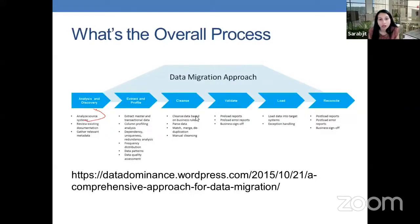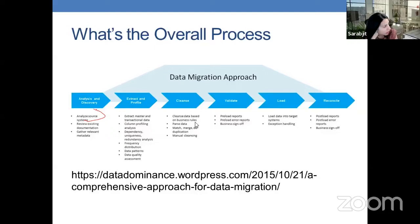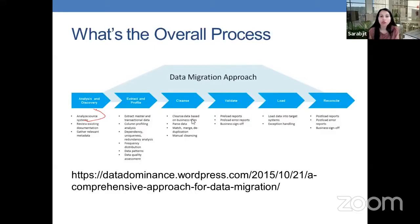In the cleansing phase, we cleanse data based on business rules. Business rules indicate how data is triggered or processed. An example of a business rule is for a banking application: when you are approved for a mortgage, there may be five things the bank looks at — your credit score and other criteria. Your business rules will define how those criteria will impact your approval or denial of that loan.